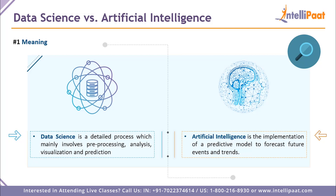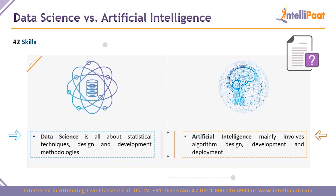Coming to the comparison between data science and artificial intelligence — starting with meaning. Data science is a detailed process involving pre-processing data, performing analysis, generating visualizations such as graphs, and using all of this to make predictions about future trends. Artificial intelligence, on the other hand, is about implementing a model used to forecast future trends and events and determine how to get there.